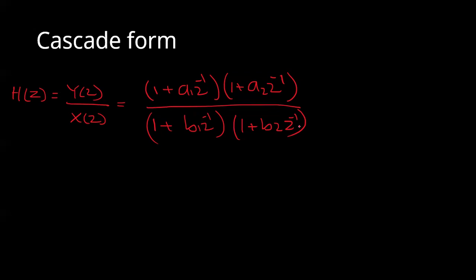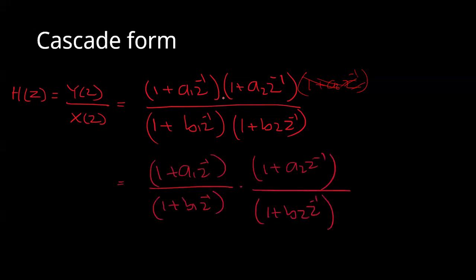The denominator is handled the same way as the first form of realization. We take the other form with a2, a1, and a3 z-inverse. The denominator roots are taken, and we cut and split the expression: 1 plus a1 z-inverse divided by 1 plus b1 z-inverse.